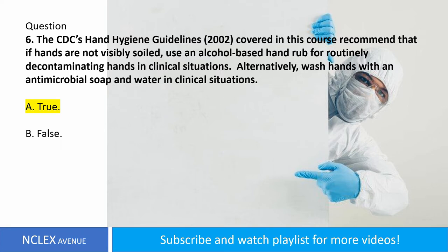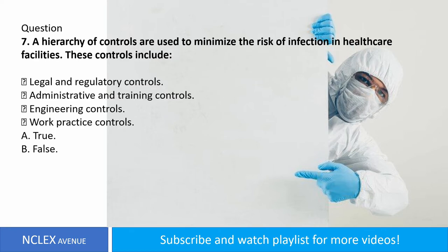Question number seven. A hierarchy of controls are used to minimize the risk of infection in healthcare facilities. These controls include legal and regulatory controls, administrative and training controls, engineering controls, and work practice controls. A. True. B. False. Answer: letter B. False.